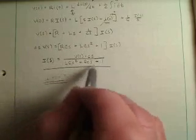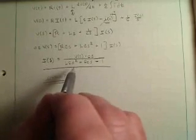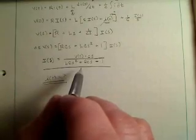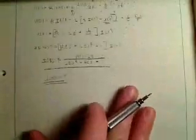And remember, the one thing to pay attention to for the final value theorem, what I of t is when t approaches infinity, is the poles of this, that is the roots of this equation. The poles have to be in the open left-half plane, otherwise you can't apply it.